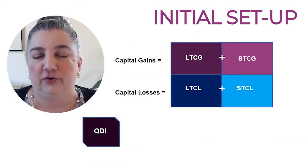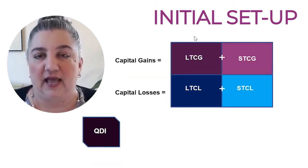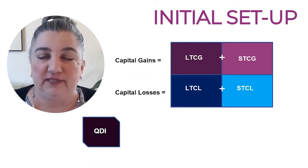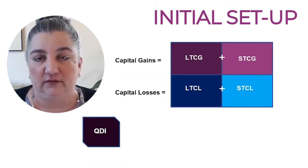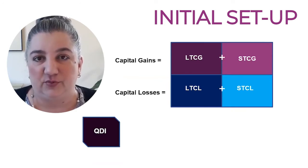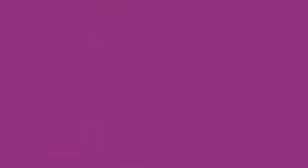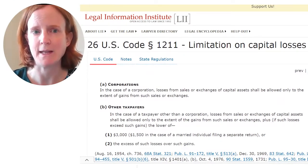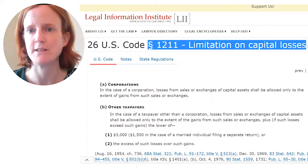I recommend that you first add the capital losses across the bottom and add the capital gains across the top. If the capital losses in the aggregate exceed the capital gains in the aggregate, you have a limitation on capital losses problem, and you have to look then to Code Section 1(h)(11). That also means you will not have a net capital gain subject to the capital gains preference, except for any qualified dividend income defined as net capital gain in Code Section 1(h)(11).